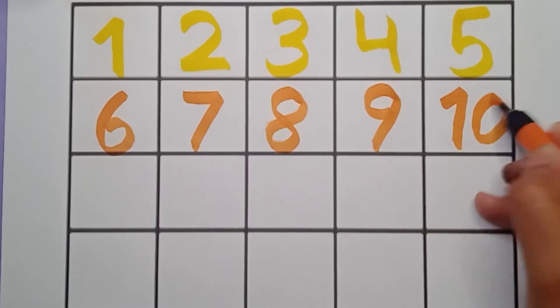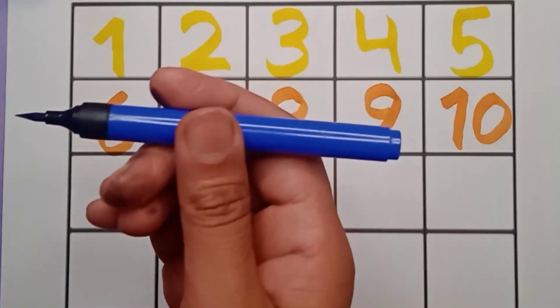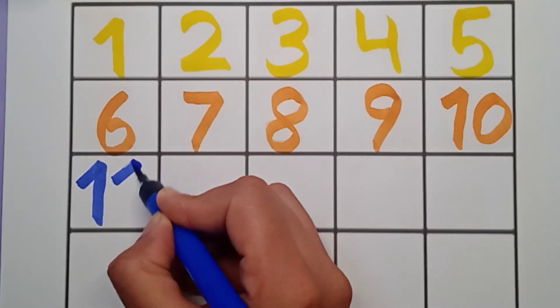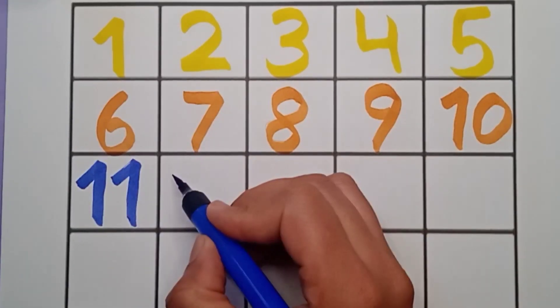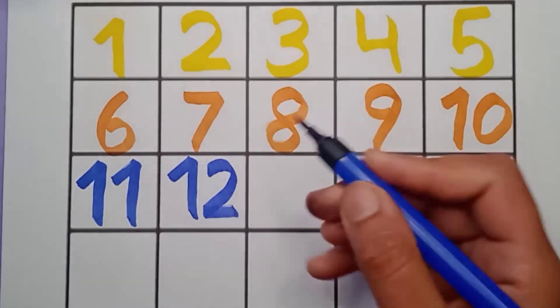Next number is eleven, eleven, eleven. It's a blue color, eleven. Next is twelve, twelve, twelve. Which color is it?